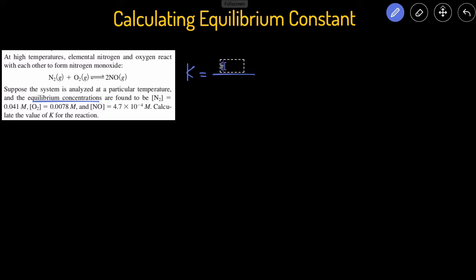The concentration of the products is NO, and you see there's a coefficient of 2. The coefficients become the power, so you have to raise it to the power of 2, divided by the concentration of the reactants. We have two reactants and they're gases — we always include gases in the equilibrium constant — so it'd be N₂ times the concentration of O₂, both raised to the first power because they have a coefficient of 1.